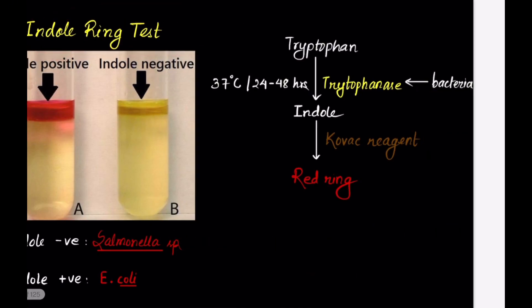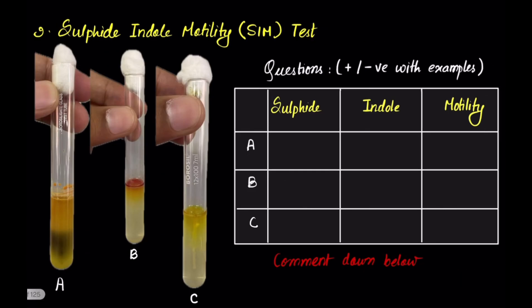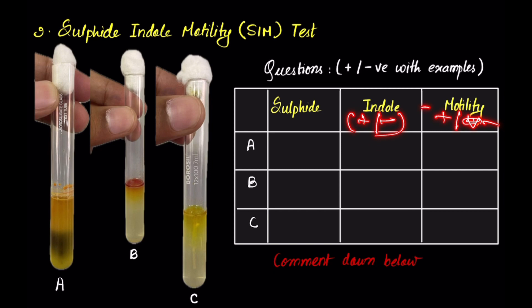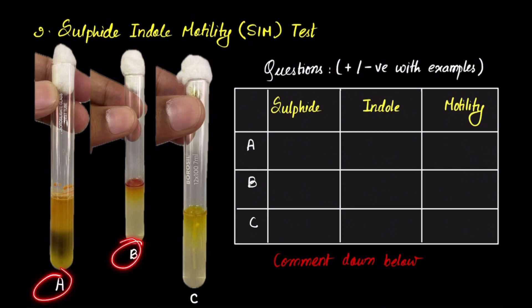We can combine hydrogen sulfide production test, indole ring test, and motility test into a special combined test called the Sulfide Indole Motility or SIM test. Looking at three specimens — specimen A, specimen B, and specimen C — tell me whether each is sulfide positive or negative, indole positive or negative, motility positive or negative, and give an example of bacteria that would give such a result. Comment down below with the correct answers.